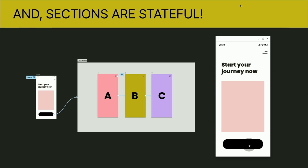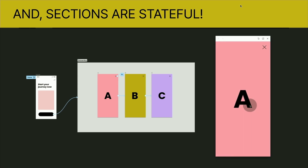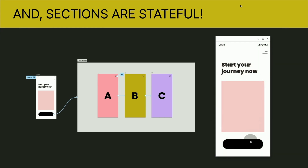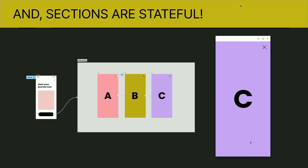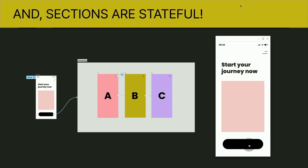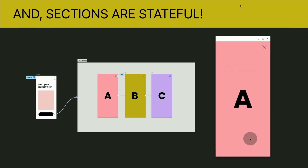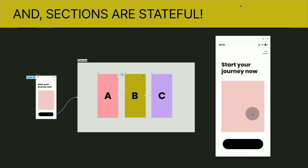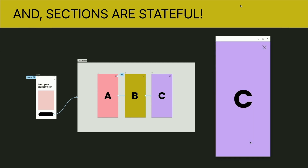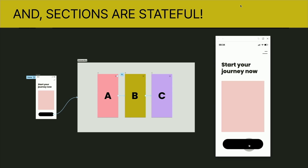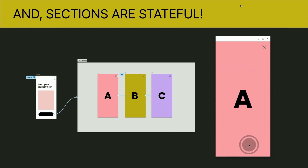Sections are not only useful when it comes to organizing and documenting, they're also great when it comes to prototyping because they make your design stateful. That means if you connect to a section, Figma is going to remember the frame in that section that you last visited. If you jump back into the section from any other given place, it's going to go back to where you left off — incredibly helpful when building things like signups and checkouts.